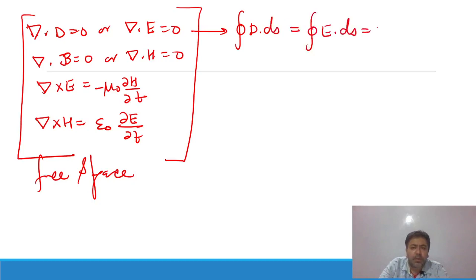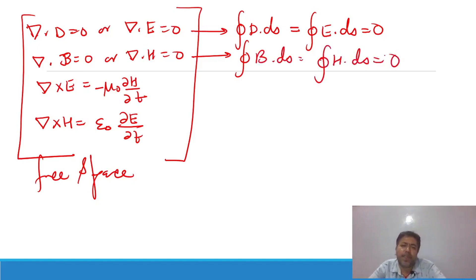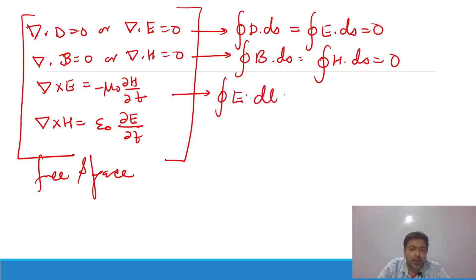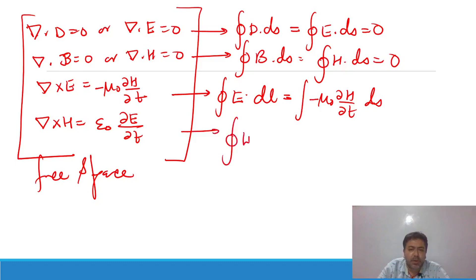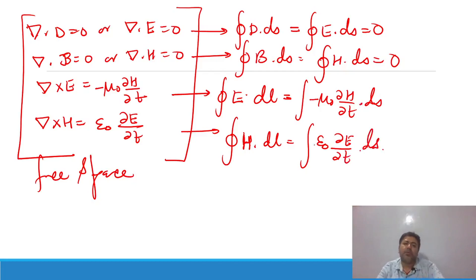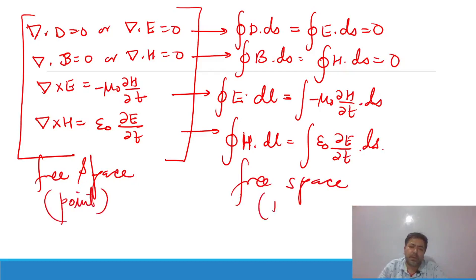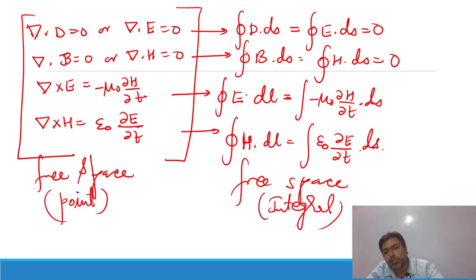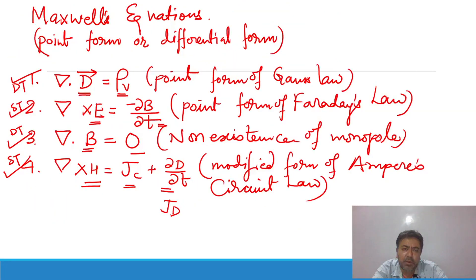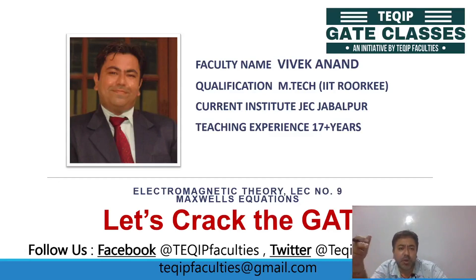For free space, we also have ∮B·dS = 0 and ∮H·dS = 0. For the line integrals: ∮E·dL = ∫(∇×E)·dS = ∫(−μ₀ ∂H/∂t)·dS, and ∮H·dL = ∫ε₀(∂E/∂t)·dS. This is the integral form for free space. The difference between these and the earlier forms is that these are point form versus integral form for free space.